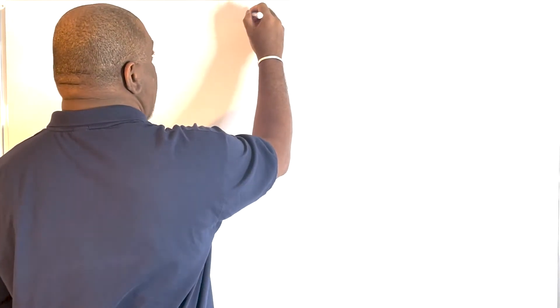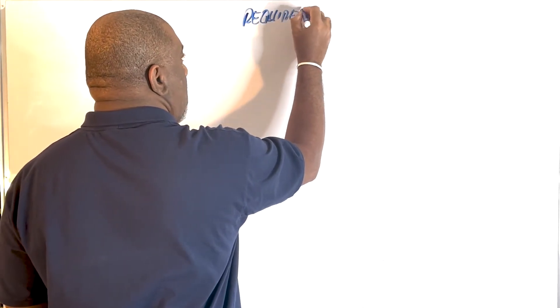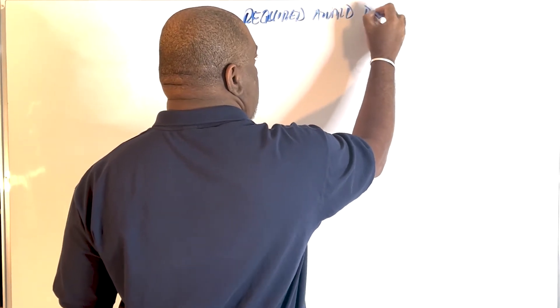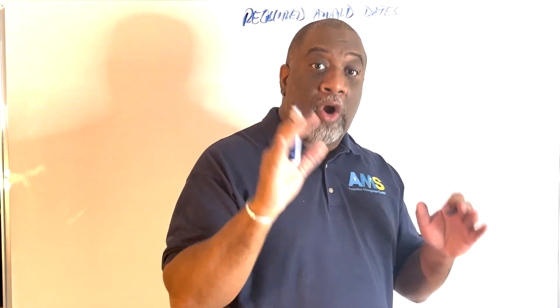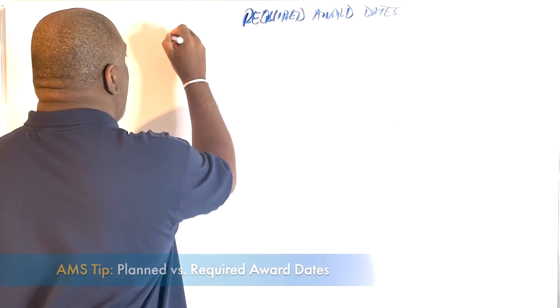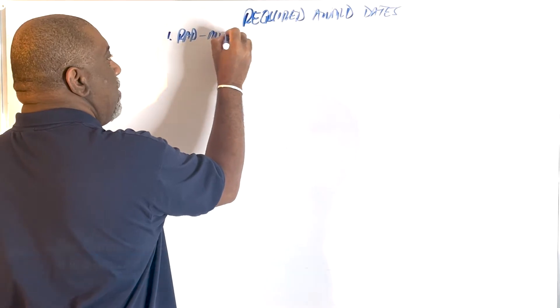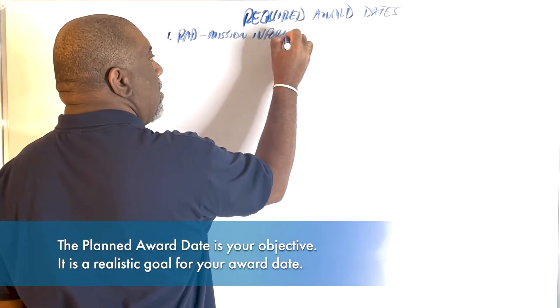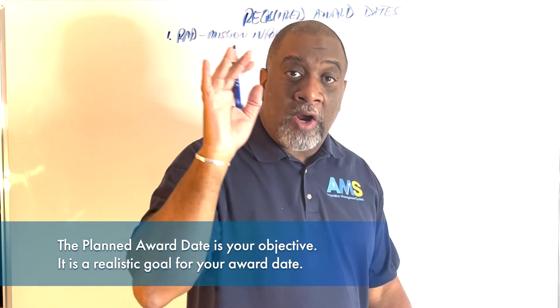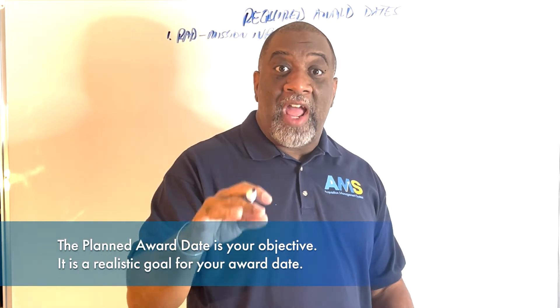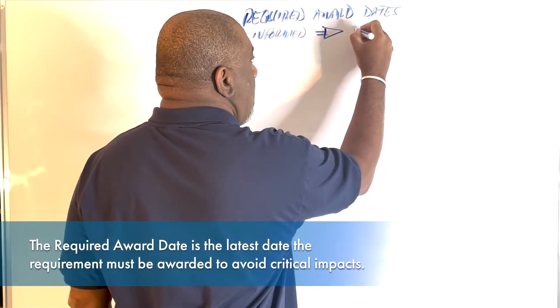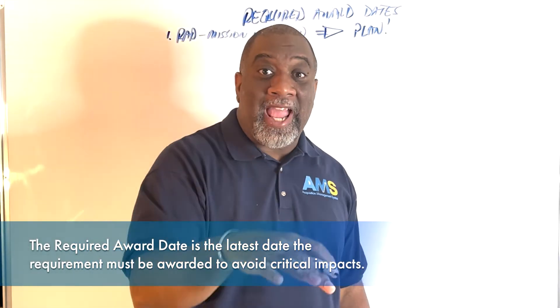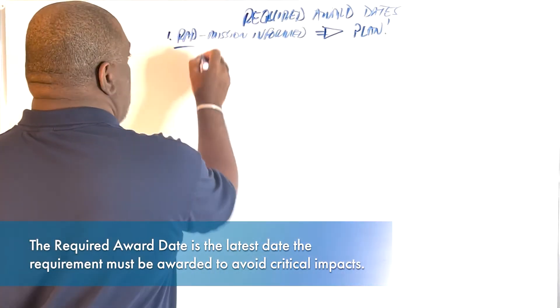One of the things you will see there is required award dates. These are the dates that are set in the system when you establish a PID from the standpoint of identifying when your requirement is needed. Please know that your RAD is mission informed. When you set your required award dates, please know that they are not informed by the plan. Actually, the RAD informs the plan. You build a plan that is reflective of your required award dates.